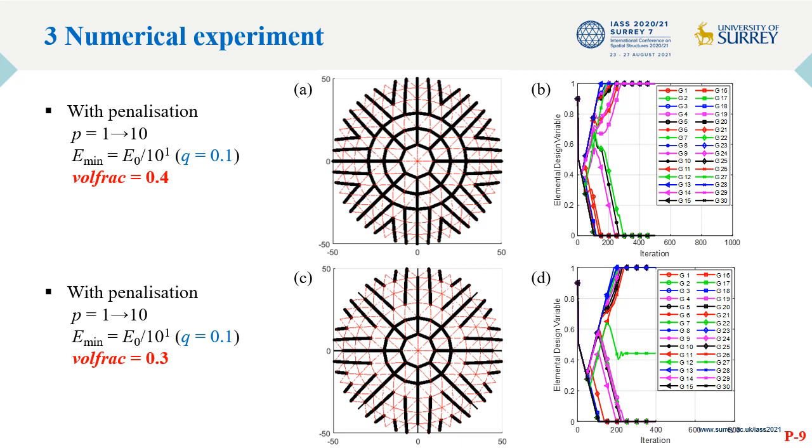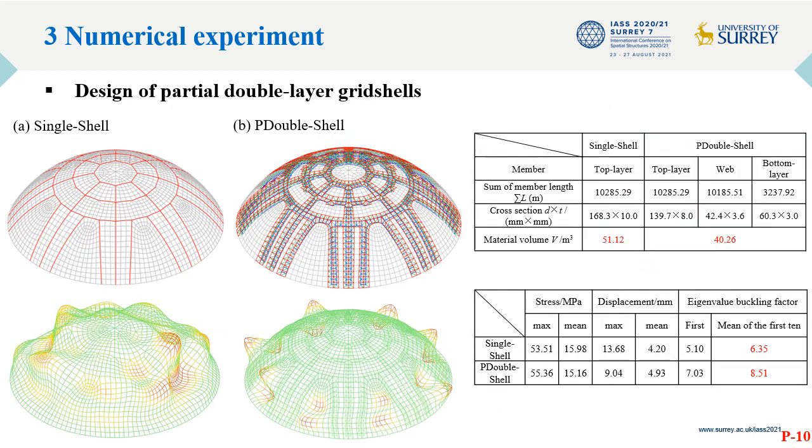The optimal structure generated with volume fraction of 0.4 is taken as the guiding path for the addition of the second layer grids. To facilitate the addition of second layer grids, a new grid system is generated based on the guiding path. The second layer grids are added by following the dual principle. The newly generated single layer and partial double layer gridshells are shown here. The results of mechanical analysis shows that under the external load, the stress level and deformation status of these two structures are similar. But the partial double layer gridshell consumes less material and displays better stability compared to the single layer gridshell.